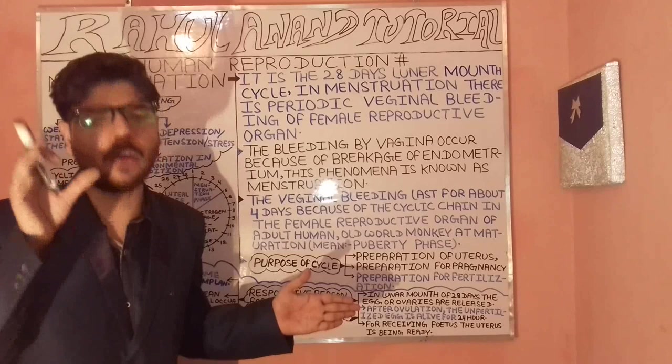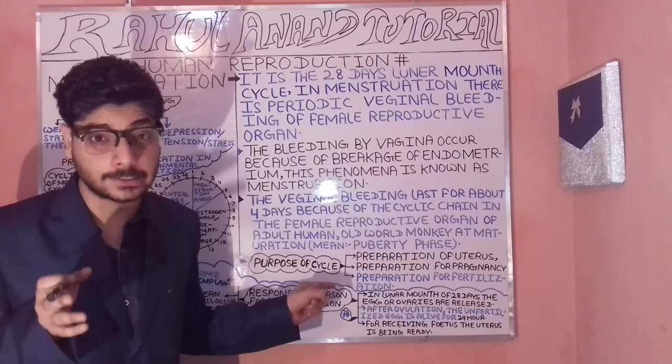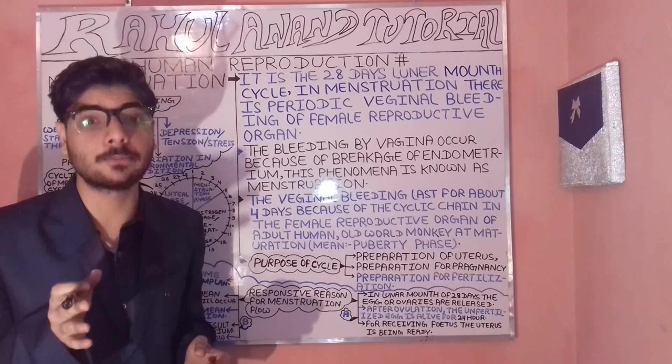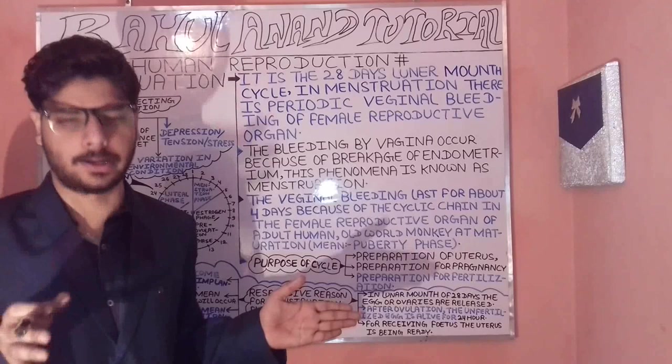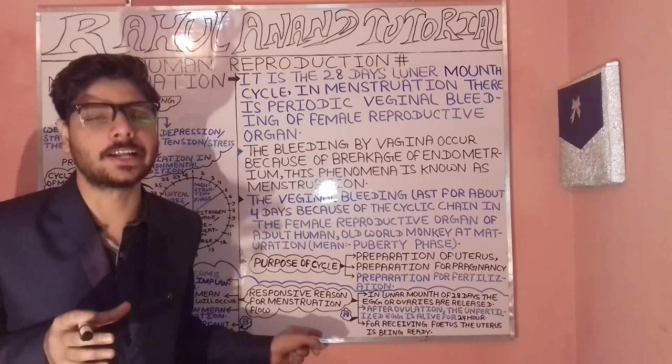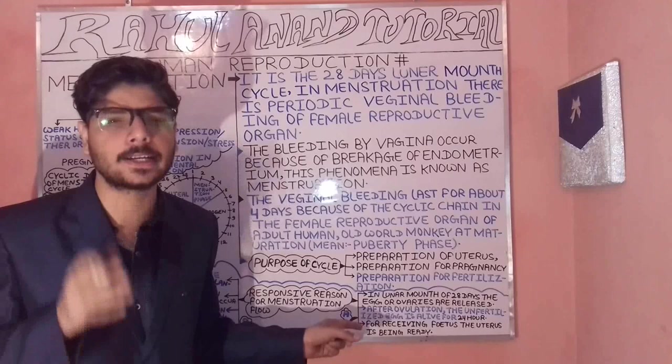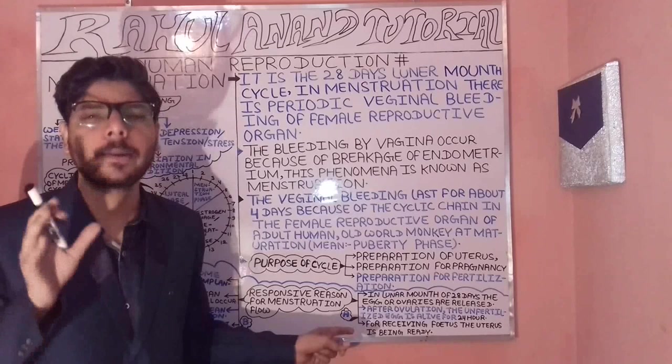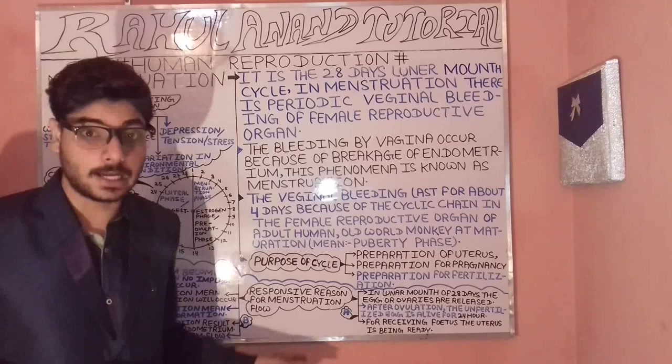In this case, vaginal bleeding occurs as part of the cyclic chain of the female reproductive organ. These cases are generally found in old-world monkeys and in human beings. Now let's understand the purposes of the menstrual cycle — which is the preparation of the uterus for fertilization and for pregnancy.